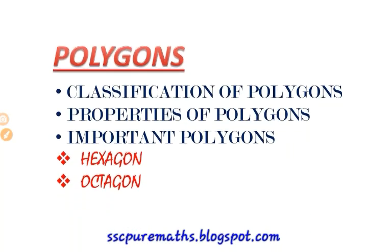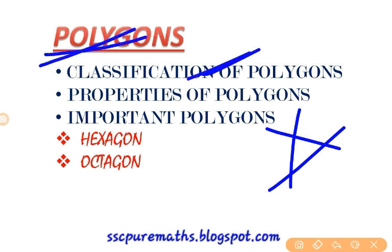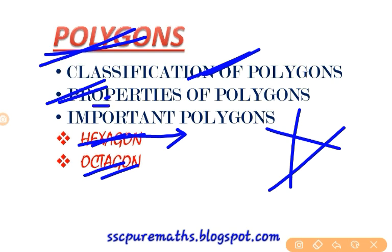Next is polygons — a two-dimensional figure formed by three or more lines. Three lines make a triangle, four make a quadrilateral, five make a pentagon, and so on. Classification includes convex polygon, concave polygon, regular polygon, and irregular polygon. For exams like SSC CGL or DAO, you need to know specific polygons like hexagon and octagon — for example, what is the longest diagonal of a hexagon.